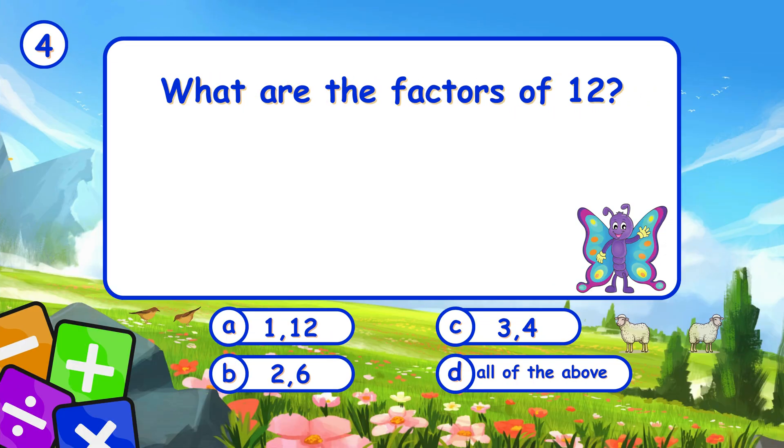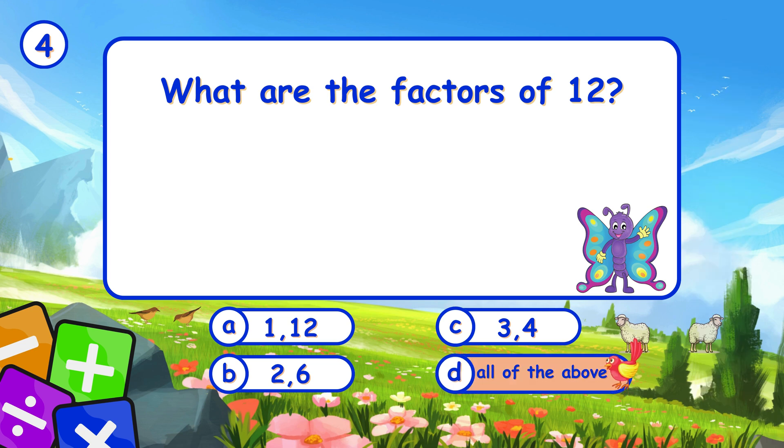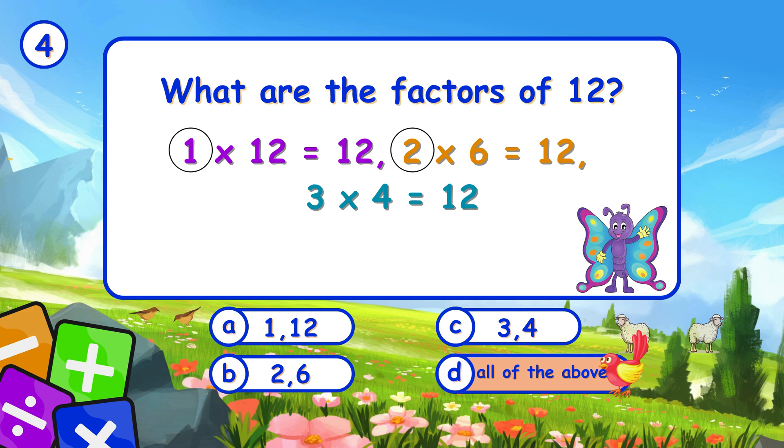What are the factors of 12? It's D, all of the above. 1, 2, 3, 4, 6, 12 are all factors of 12.